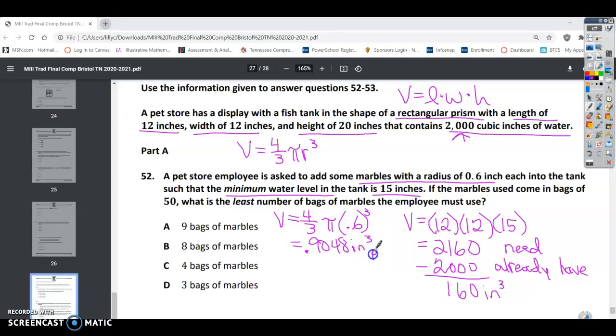0.6 cubed is 0.216 times π times 4/3 equals 0.9048 inches cubed. So this is per marble, because we just used the radius of one marble.